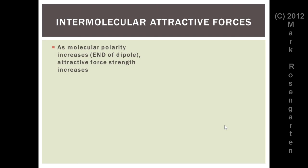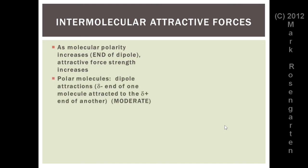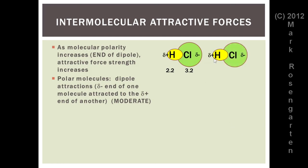As molecular polarity increases and the electronegativity difference of the dipoles increases, attractive force strength will also increase. For polar molecules, this gives what are called dipole attractions, where the partially negative end of one molecule is attracted to the partially positive end of another, much like the north pole of a magnet is attracted to the south pole. This has moderate attractive force strength. In HCl, the chlorine has a significantly higher electronegativity, so when they bond the chlorine has a higher density of electrons around it — giving the chlorine a slightly negative charge and the hydrogen a slightly positive charge. When another HCl molecule comes by, the partially positive end of one is attracted to the partially negative end of the other, giving you your dipole attraction, which holds those molecules together in the solid or liquid phase.